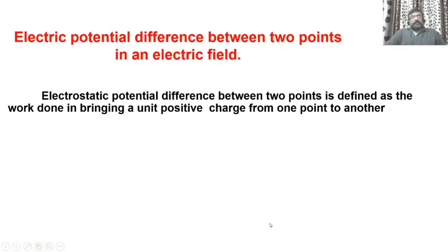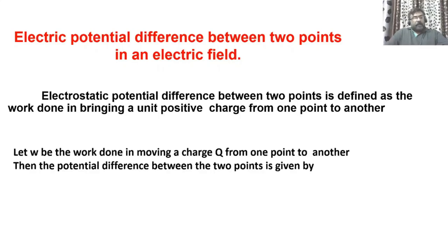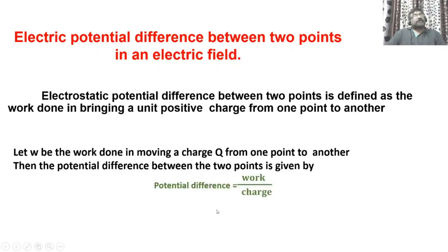The electrostatic potential difference between two points is defined as the work done in bringing a unit positive charge from one point to another. Let W be the work done in moving a charge Q from one point to another in an electric field. Then the potential difference between the two points is given by: potential difference is equal to work divided by charge, or V is equal to W divided by Q.